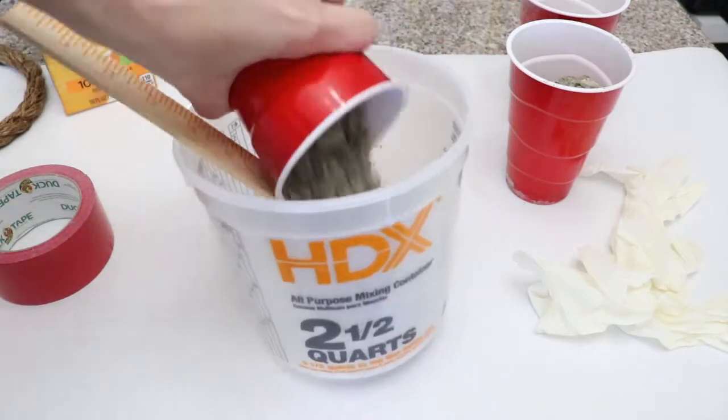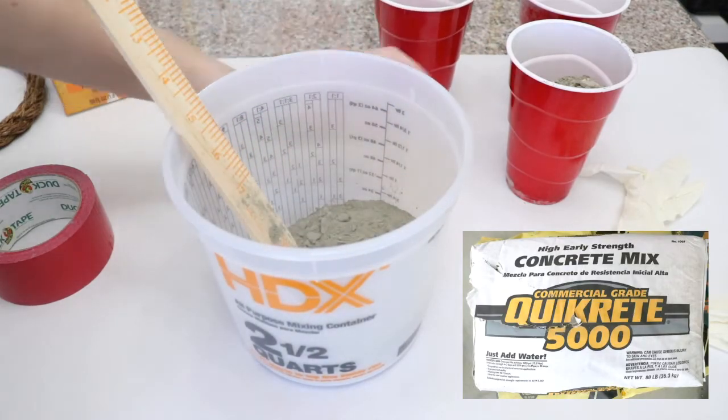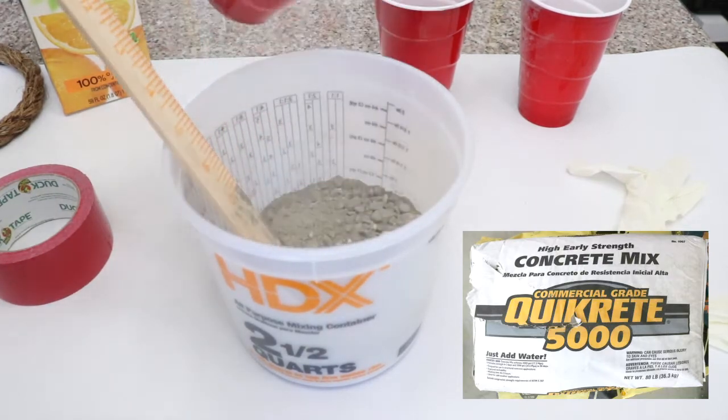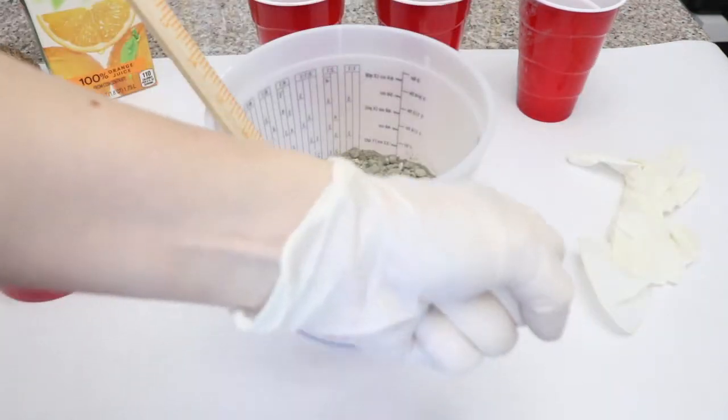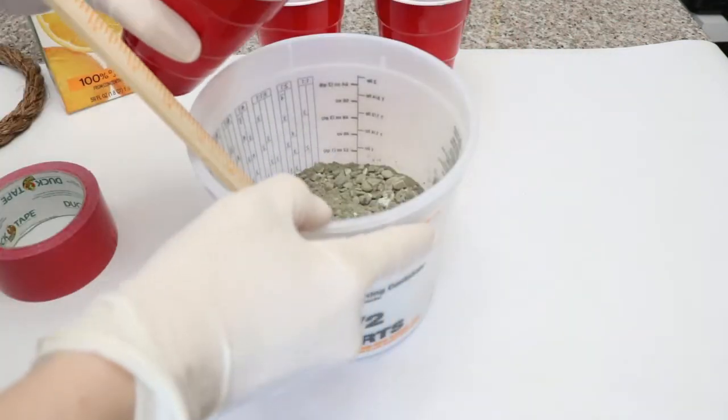To get started, pour your two cups of Kwikrete into a bucket. You can pick this up at any hardware store. Make sure your bucket and your stick are disposable. You won't be able to use them after this. Protect your hands and your work surface, then slowly add in water.